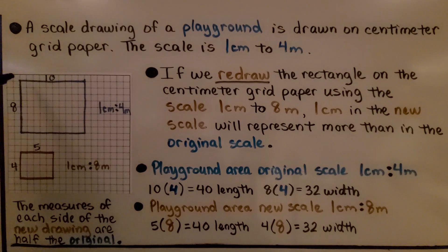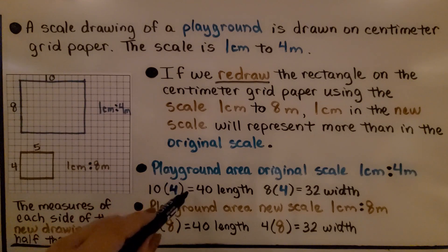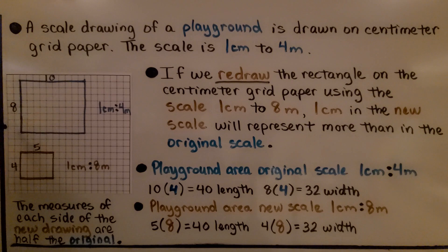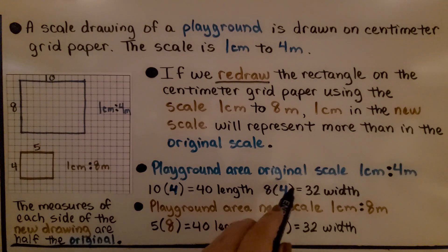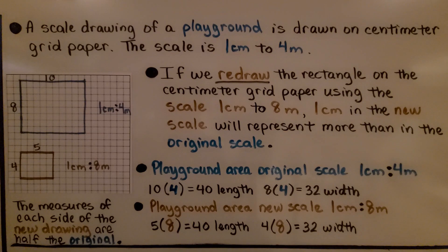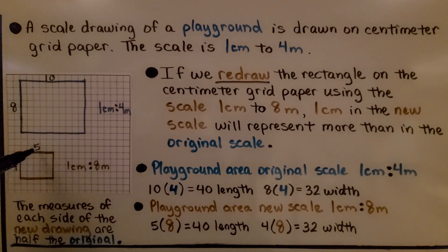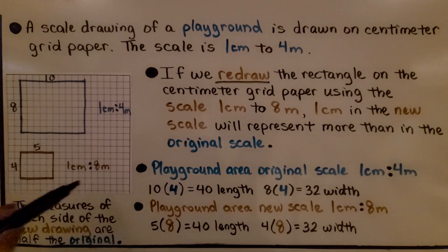We have ten for our length: ten times four equals forty. We have eight for our width: eight times four equals thirty-two. For the new scale of one centimeter to eight meters, we do five times eight, which is forty — the same as before — and four times eight, which is thirty-two — the same as before.